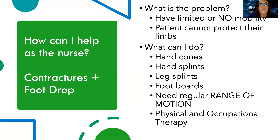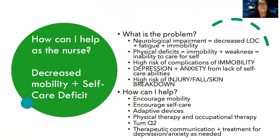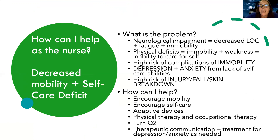For decreased mobility and self-care deficit, the big problem is that patients have a neurological impairment leading to decreased level of consciousness, fatigue, and immobility. They have physical deficits that lead to further immobility and weakness, so they can't care for themselves. There are so many complications from immobility — we'll cover more in the musculoskeletal section — but depression and anxiety can also result because they can't take care of themselves. They're also at high risk for injury, falls, and skin breakdown.